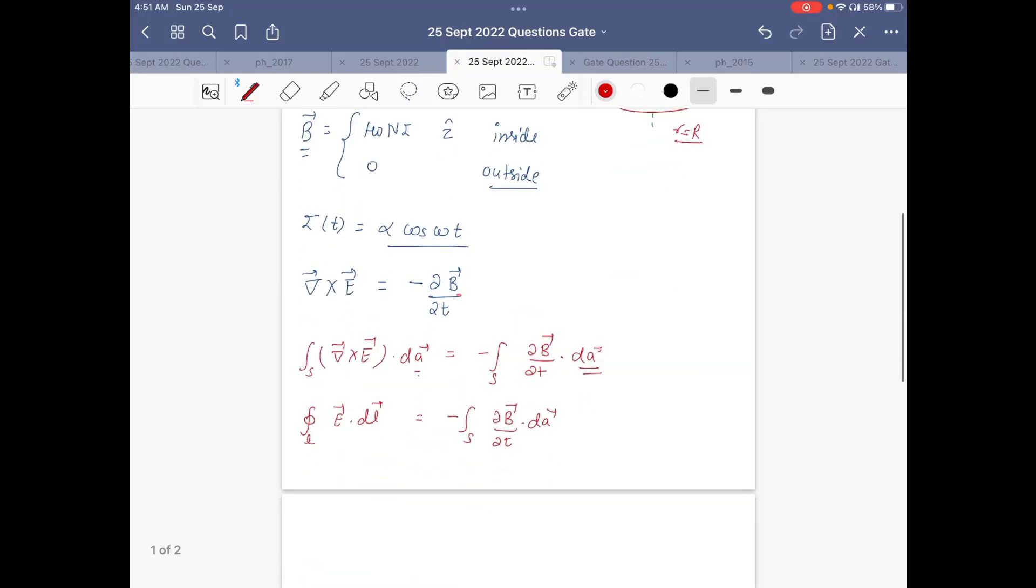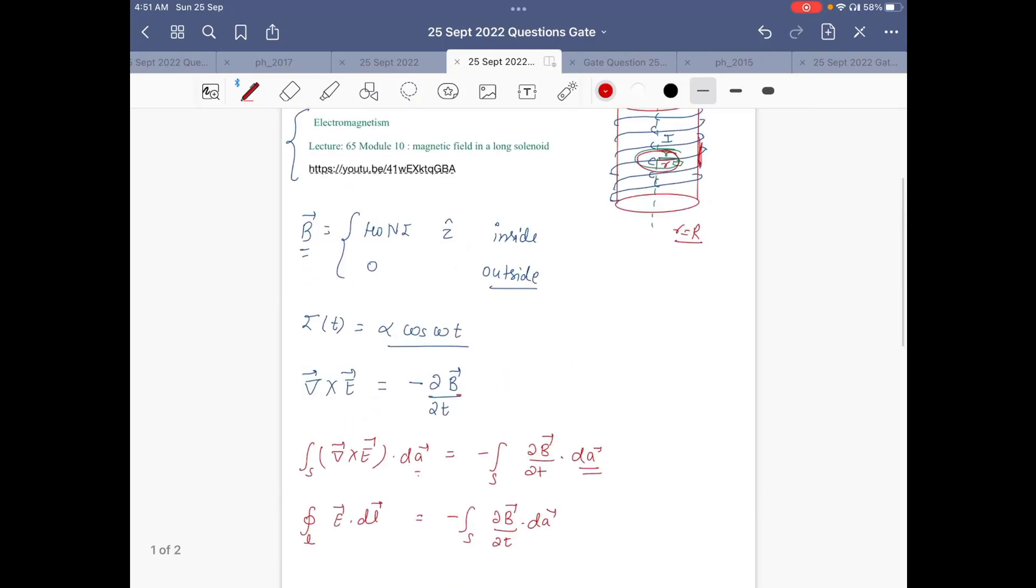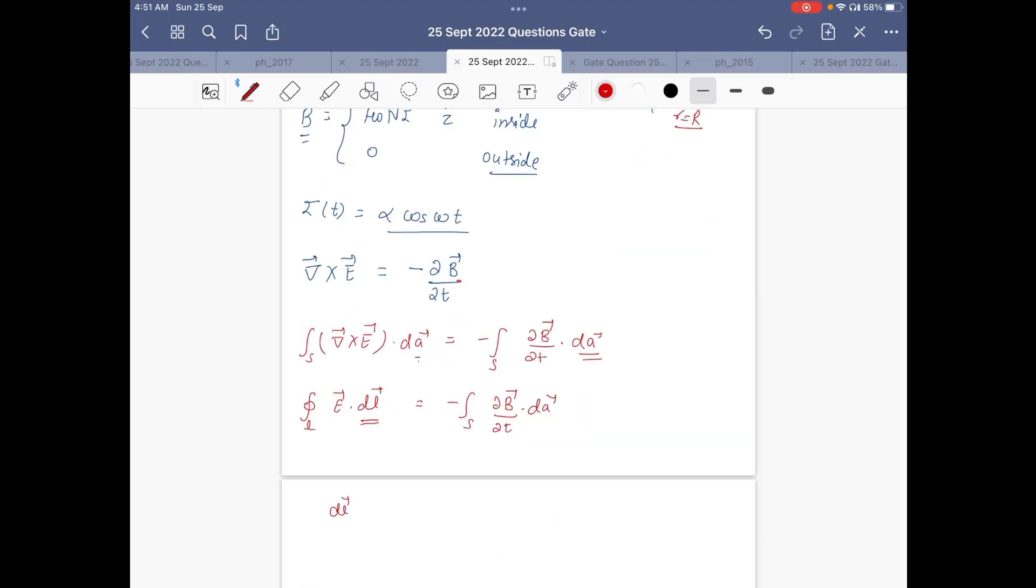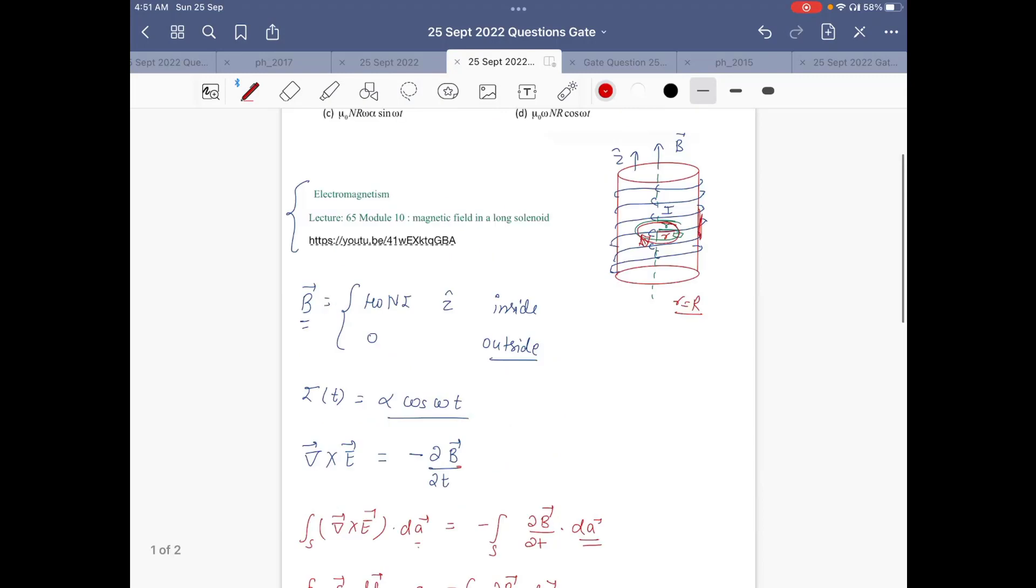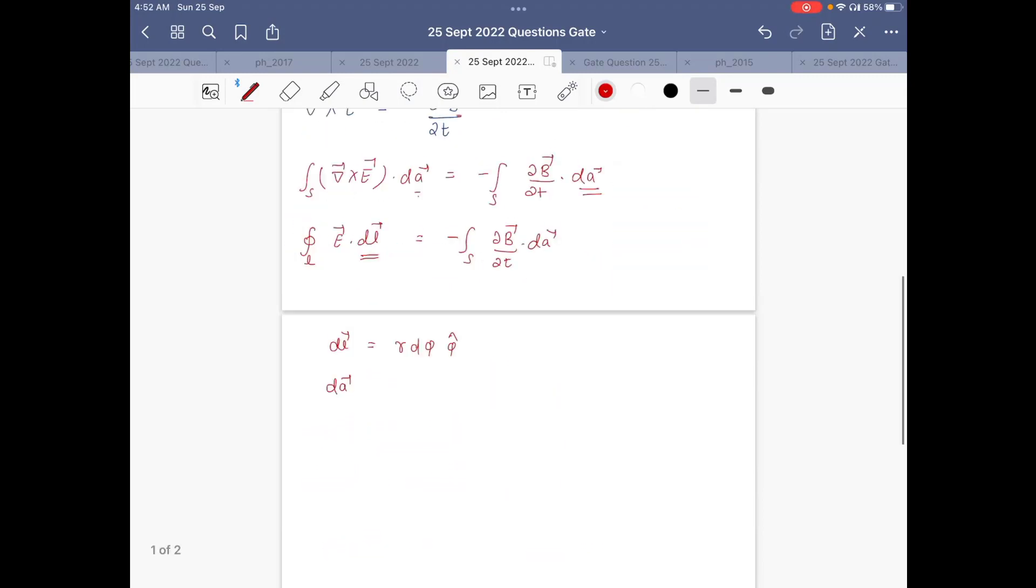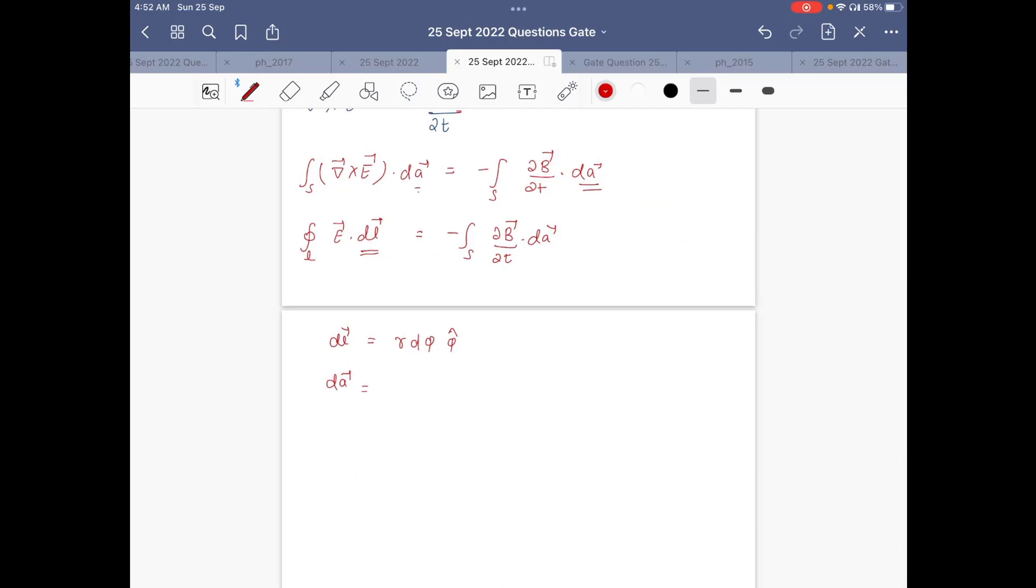So we will take E dot dl. The dl vector for this Amperian loop is in the phi-cap direction. So in cylindrical coordinate system, dl in phi-cap is r dφ in the phi-cap. Similarly, dA is the perpendicular surface area vector from this loop which is z-cap. So in the z-cap direction, dA is r dr dφ in the z-cap direction.